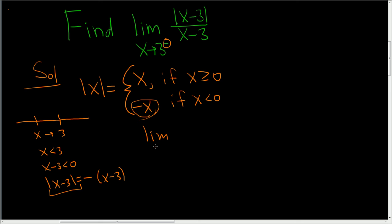So finally, the limit as x approaches 3 from the left. Now we're going to replace this with this. So this becomes negative x minus 3 all over x minus 3.